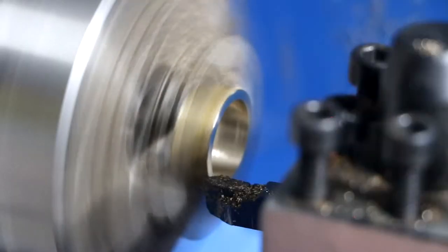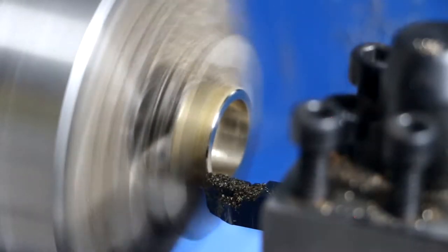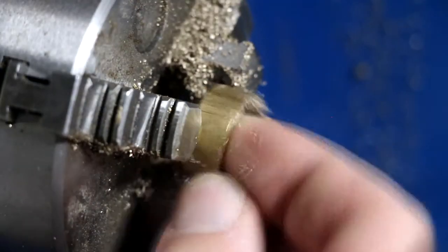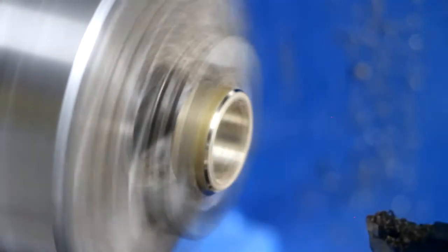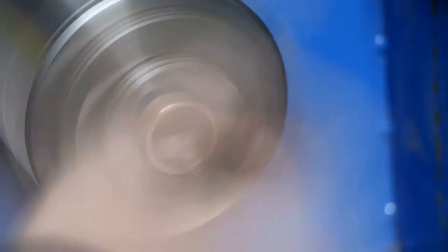Once it was squared off I chamfered the outer edges to make rounding them over a bit easier. Once that was done it was back to sanding to get the inside surface nice and smooth.